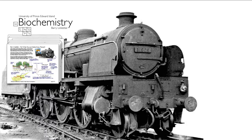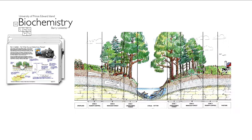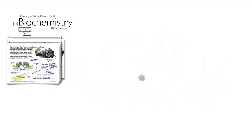Buffers are everywhere — like the bumpers on Thomas the Tank Engine or the large stops at the end of railway tracks that absorb the shock of an engine hitting something. In farmland, buffer zones around streams absorb fertilizers and pesticides before they can reach sensitive waterways — they prevent change in the stream by absorbing bad things coming in.